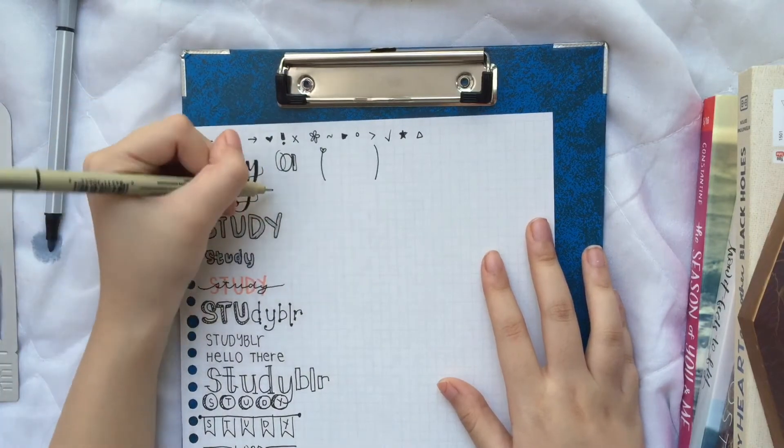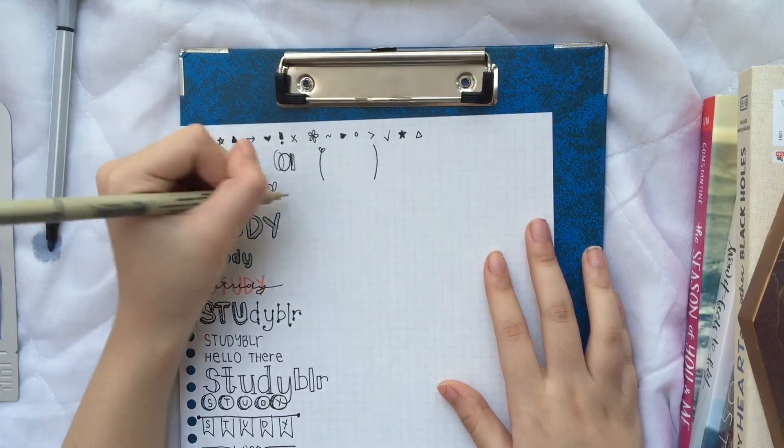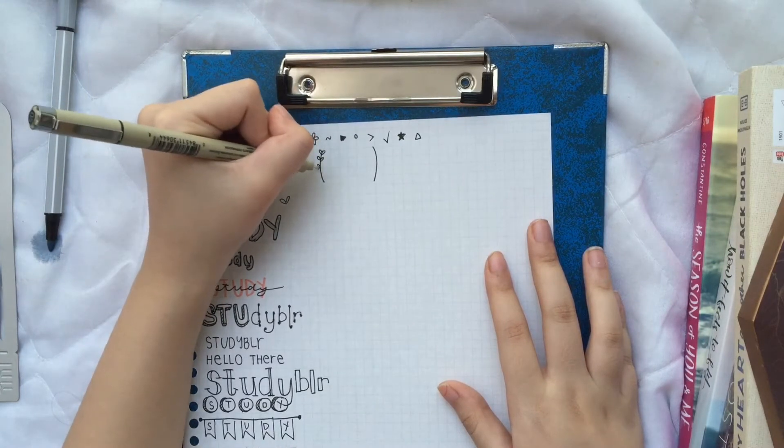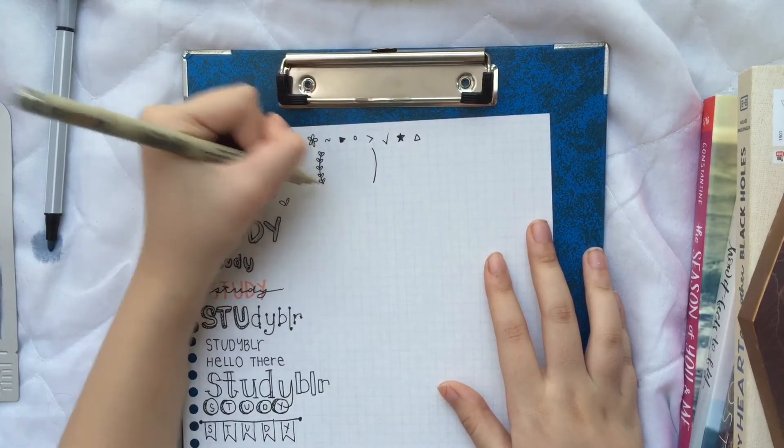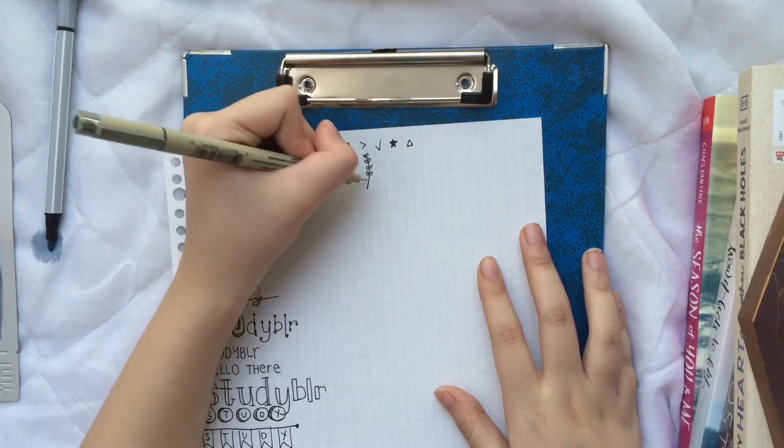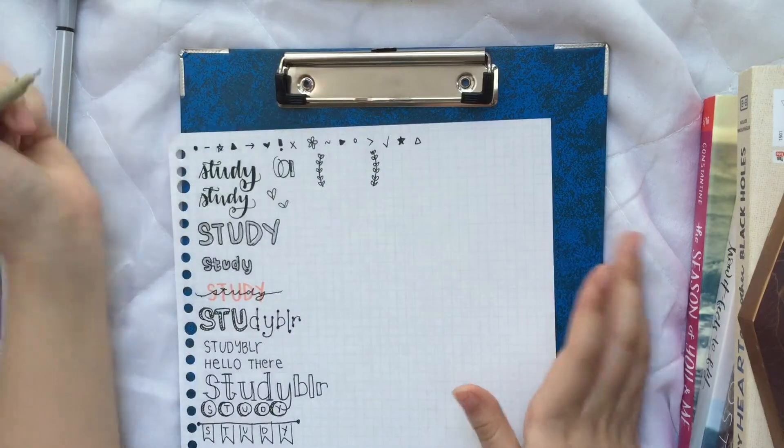But what I do to make it easier - you know how we can draw out hearts like this? So I just do that to the parenthesis. Oh my gosh, I can't talk. And then voila, there you go.